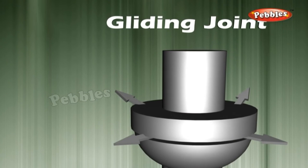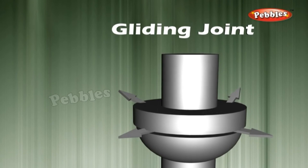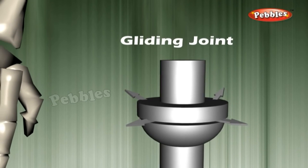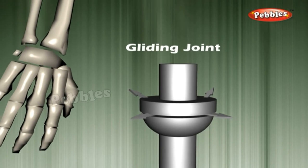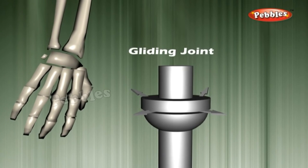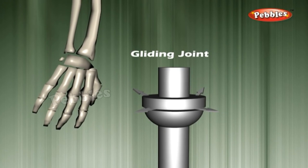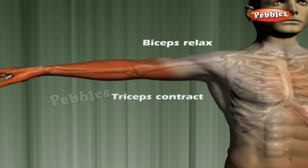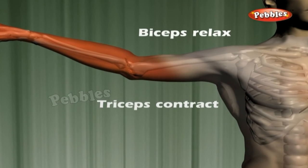Gliding Joint. The wrist or ankle joints have flattened ends of bones that can move or glide against each other. These joints allow side-to-side as well as backward and forward movement. The vertebrae also have similar joints that allow slight movement. Such joints are called gliding joints.